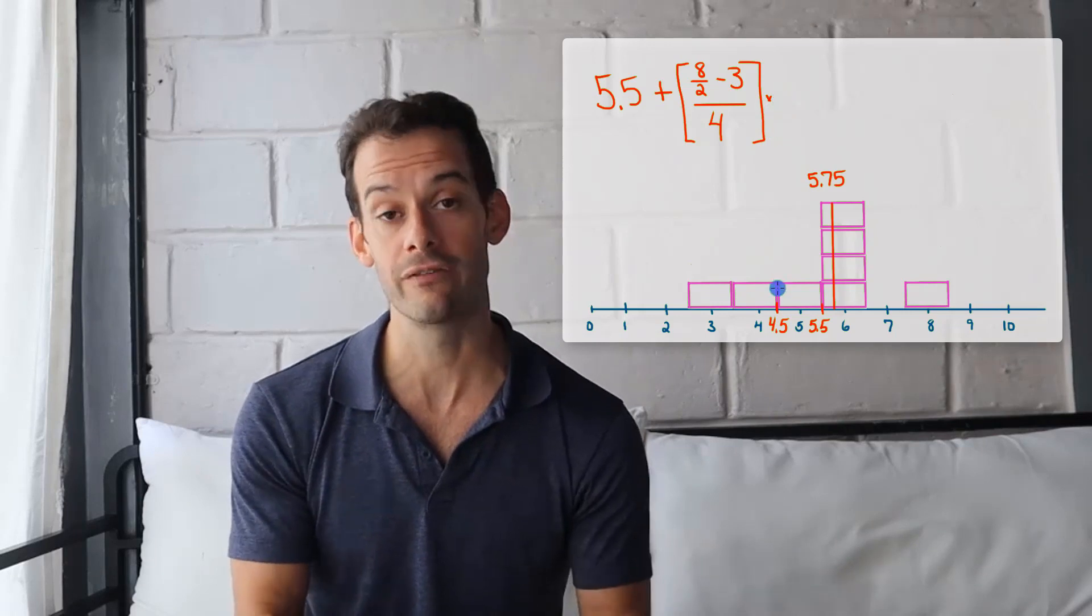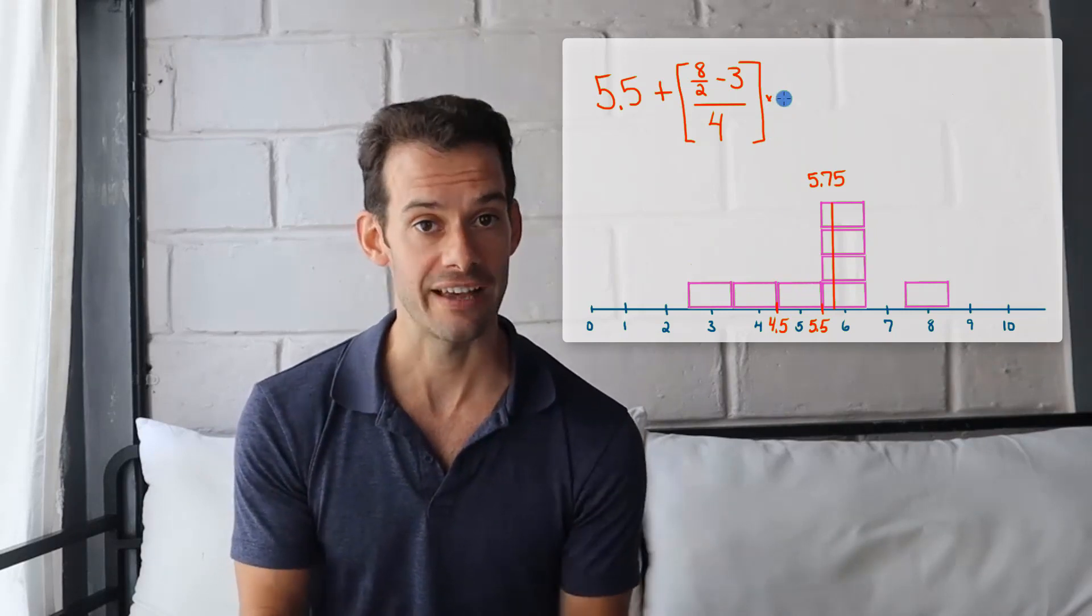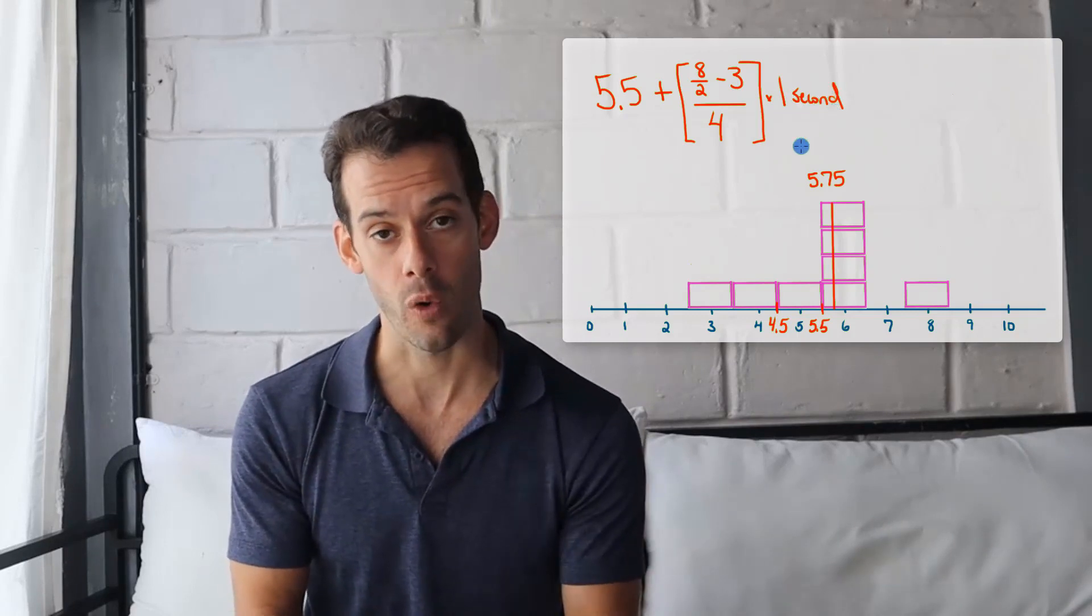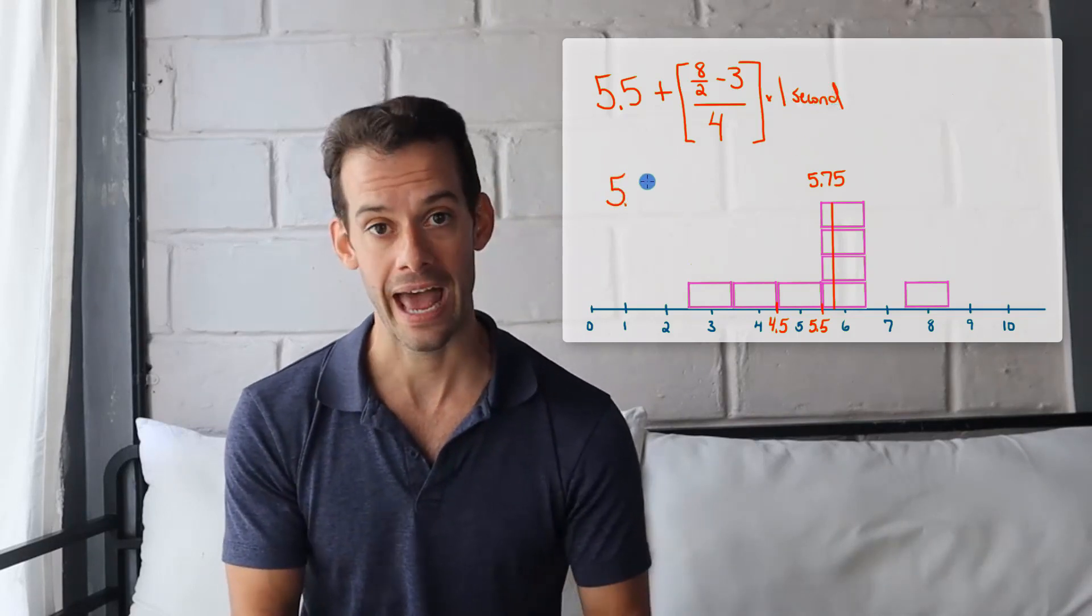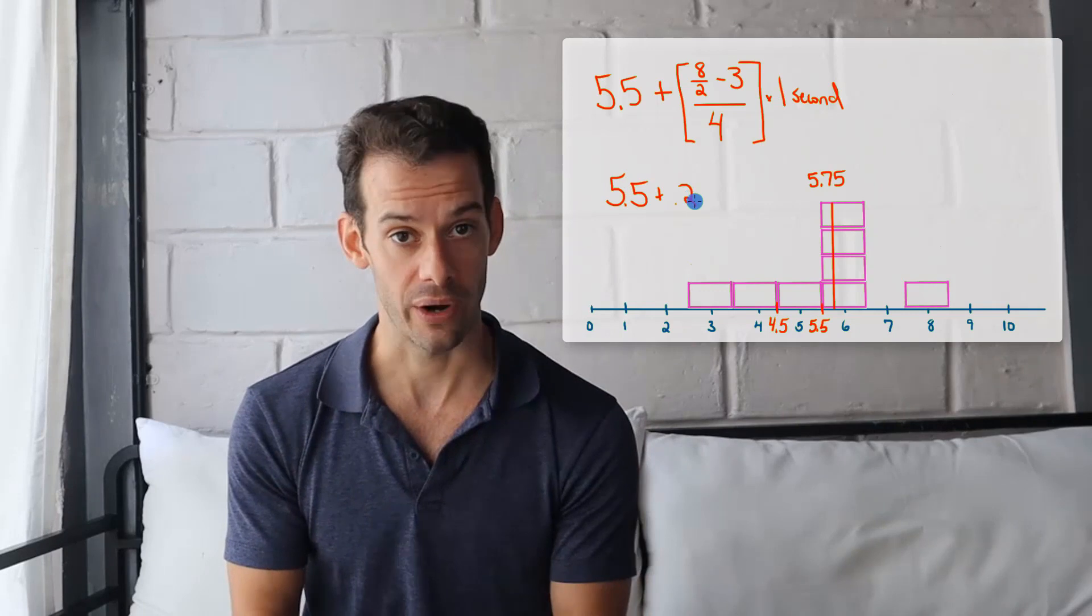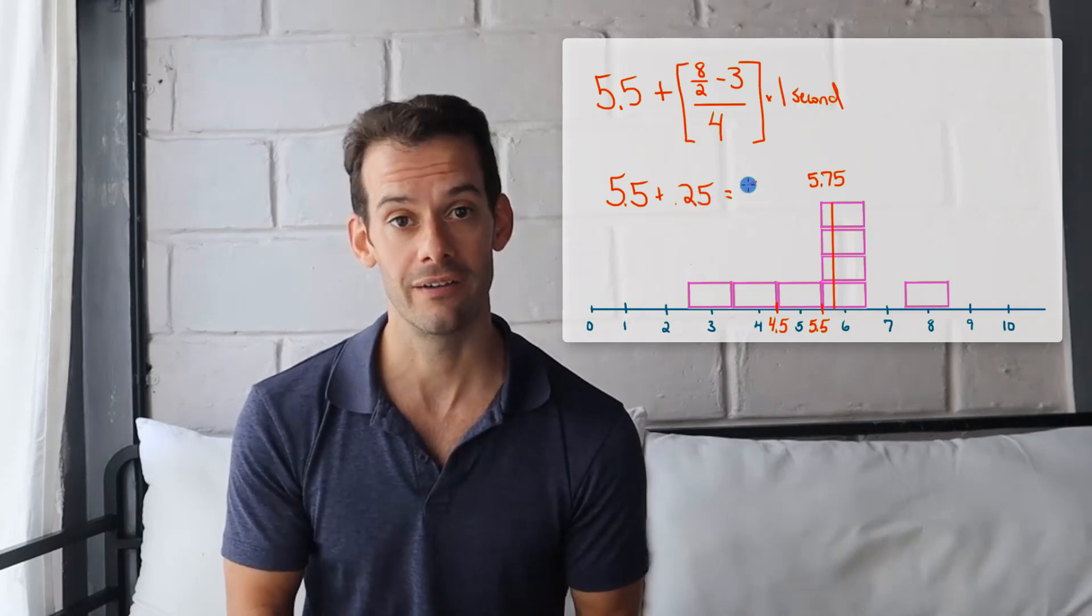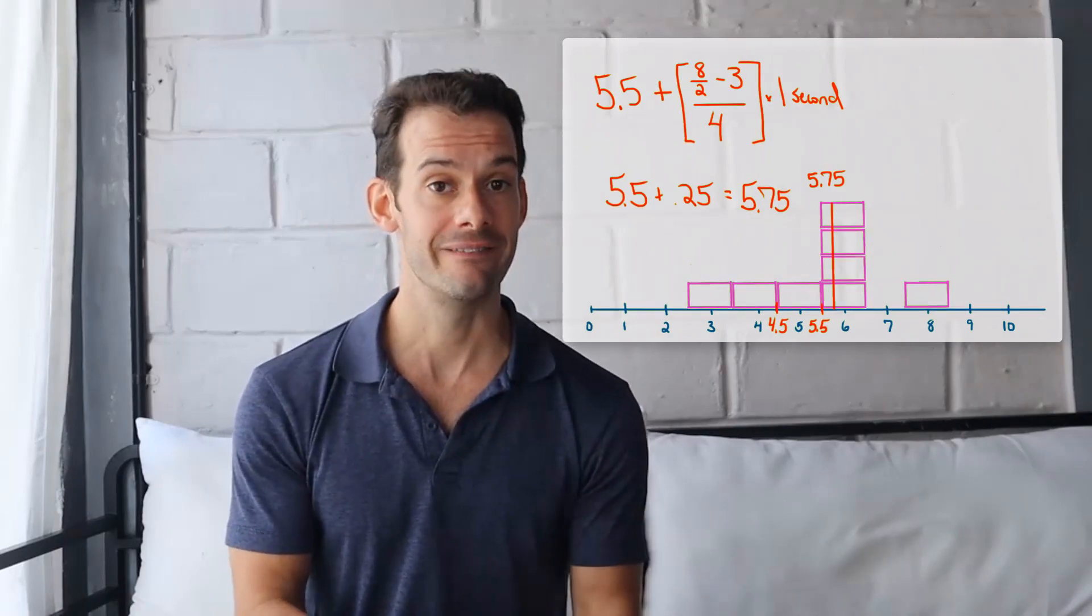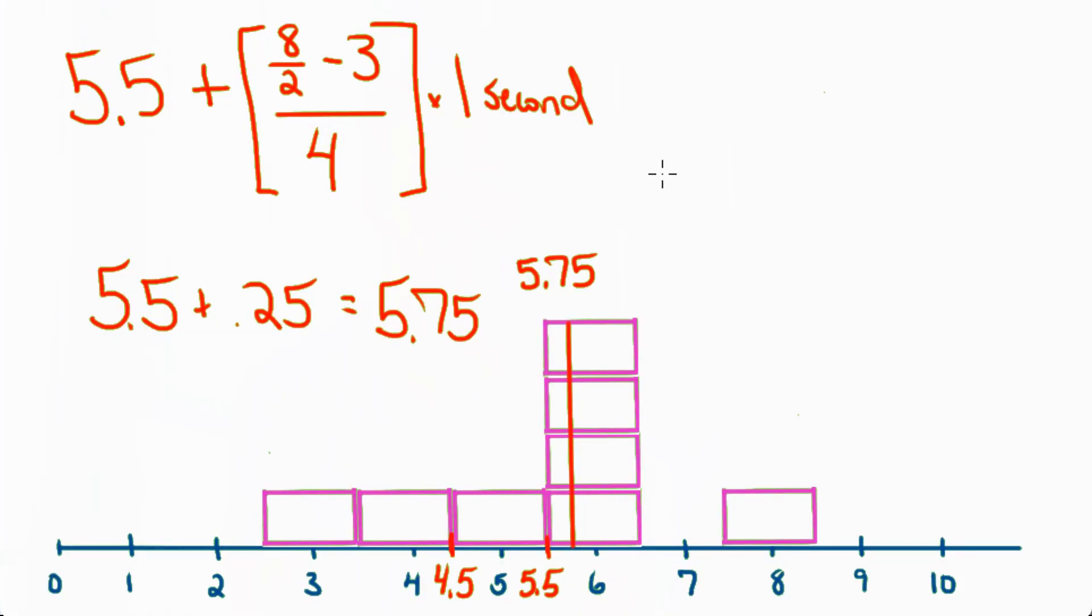And then the last question is well 1 fourth of what? So what was our class interval? In our case it was 1 second. So we need to add 1 quarter of a second. And so we add 5.5 plus 0.25. This gives us a total of 5.75 seconds. So that's the formula that we used even though we did it visually. So let's turn it into a real formula.